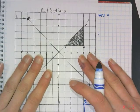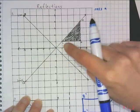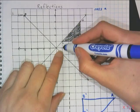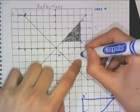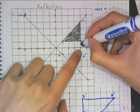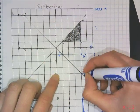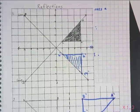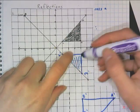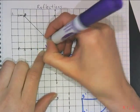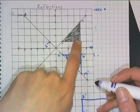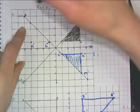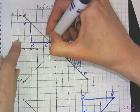When we reflect across an axis, say reflecting triangle LMN across the X-axis: L is 1 up, so L prime is 1 down. M is 4 up, so M prime goes 4 down. Reflecting across the Y-axis instead: if a point was 1 right, it's now 1 left; if it was 4 right, it's now 4 left. Points 4 up stay 4 up but on the opposite side of the Y-axis.